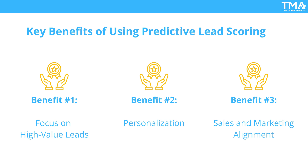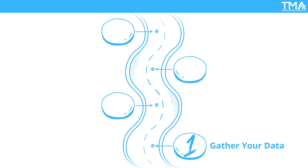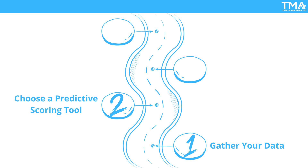This alignment leads to better collaboration and a more streamlined sales funnel. Now, how do you implement predictive lead scoring? Step one: gather your data. Collect as much historical data as possible, including customer demographics, sales interactions, and engagement metrics. Step two: choose a predictive scoring tool that integrates with your CRM. Popular options include Salesforce Einstein, HubSpot, and LeadSpace. These tools use built-in algorithms to handle the heavy lifting of model building.